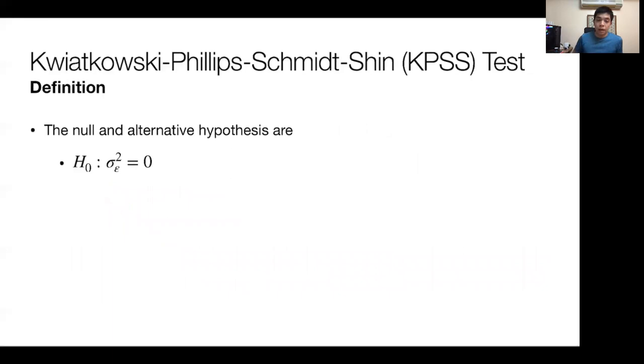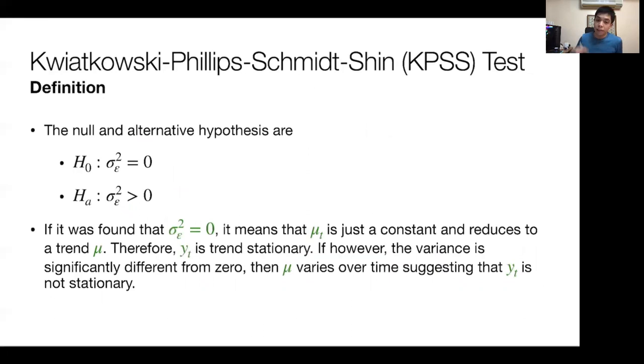The null and alternative hypotheses are specified as: if the variance of the error equals zero, and if the variance is greater than zero. A variance cannot be negative. If it was found that this is indeed equal to zero, it means that mu t is just a constant and reduces to a simple trend. Therefore, if that is the case, the series is trend stationary. However, if that variance is positive, then it means that mu, that trend varies over time, suggesting that YT is not a stationary process.